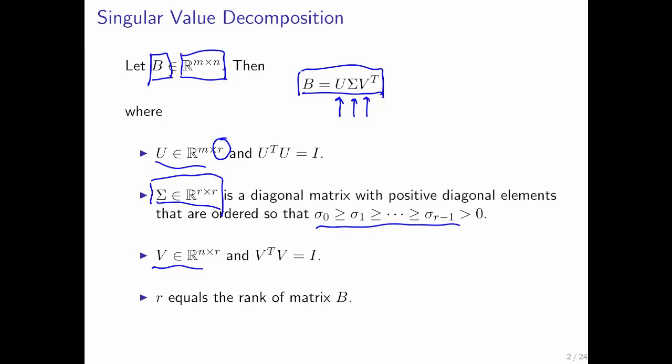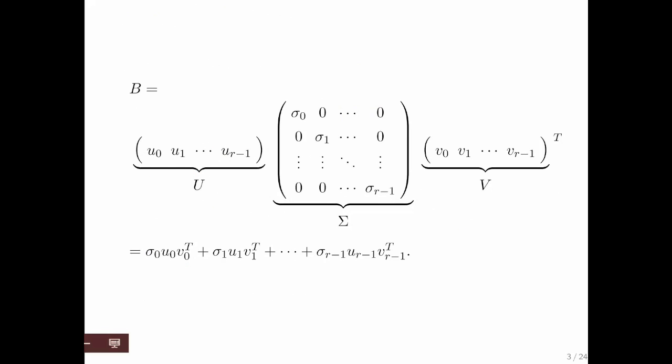These are known as the singular values. Okay, now what is it that we can do with a singular value decomposition? Well, let's home in on this a little bit more. Here, we view our matrix U as the columns that constitute U. Remember, those are orthonormal because U transpose U is the identity. And V also has orthonormal columns. And then here we see that sigma is this diagonal matrix, positive entries from largest to smallest along its diagonal.